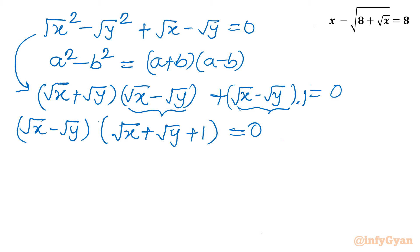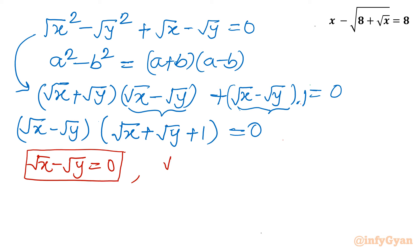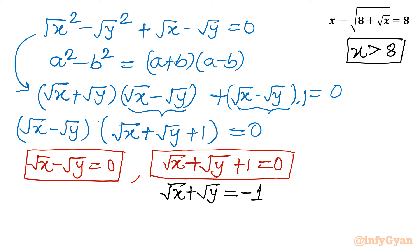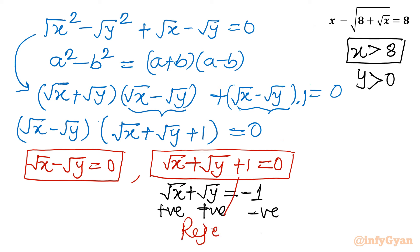Since the product equals zero, we conclude two equations: either root x minus root y equals 0, or root x plus root y plus 1 equals 0. Let me solve the second equation first. If root x plus root y equals negative 1 — but our domain was x greater than 8. If x is greater than 8, then y equals 8 plus root x, so y is always positive. Since root x and root y are both positive, their sum cannot be negative for real solutions. So positive plus positive must be positive, and we reject this equation for real solutions.